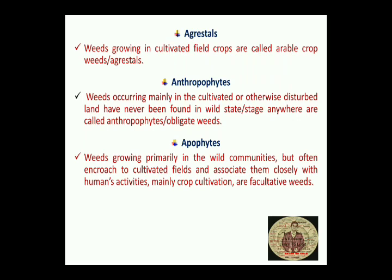The next terms are Anthropophytes and Apophytes — there is often confusion among students about these, so I'll try to sort that out. The second term is Anthropophytes: weeds which occur mainly in cultivated or otherwise disturbed land and have never been found in a wild state anywhere. They are known as Anthropophytes, or obligate weeds.